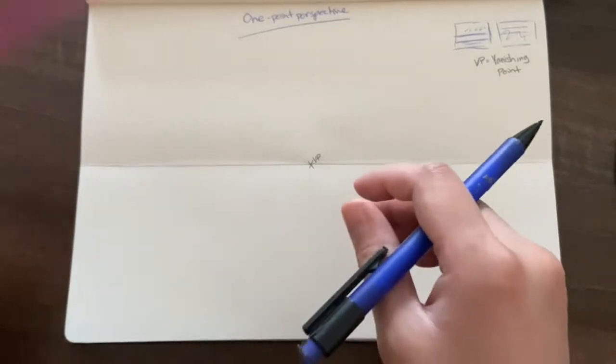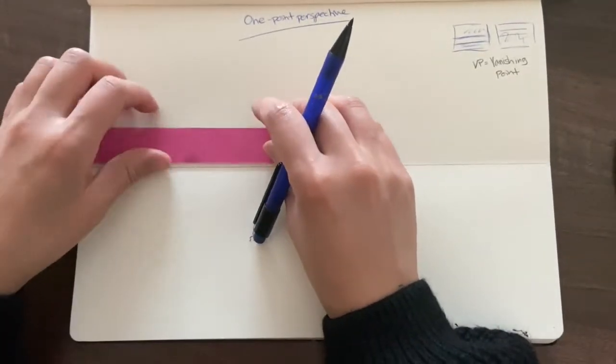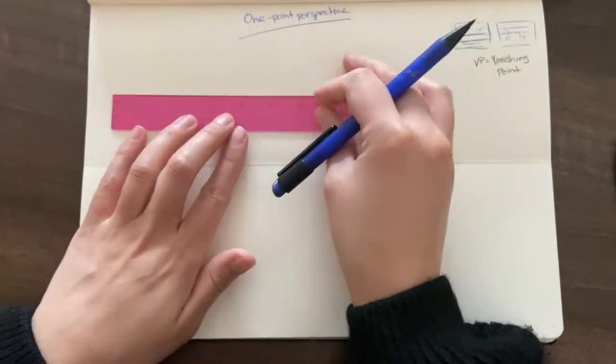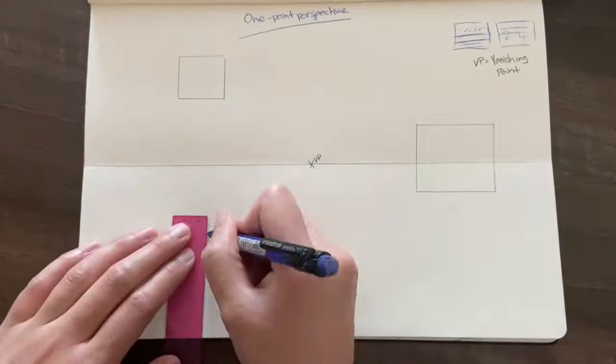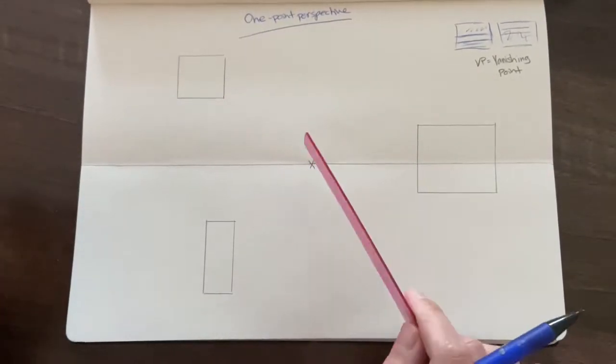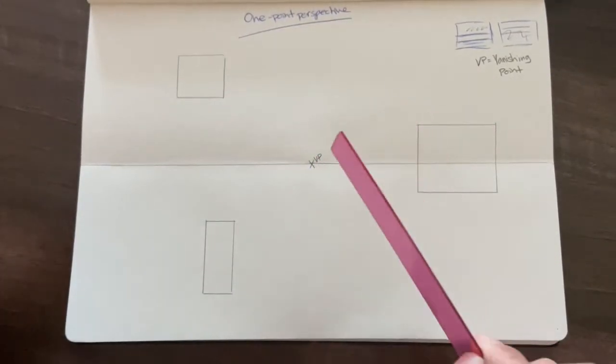So get a ruler and draw those three shapes out like so. Pause the video now, so you can draw those three shapes.